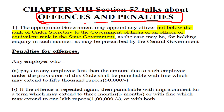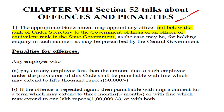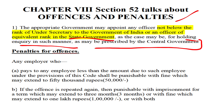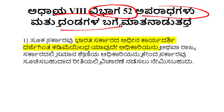It says that the appropriate government may appoint any officer not below the rank of Under-Secretary to the Government of India. This is very, very important. As we have seen, the officer who tries to settle the claim is not below the rank of a gazetted officer. Whereas the one who decides about offenses and penalties should not be below the rank of Under-Secretary to the Government of India, or an officer equivalent to that rank in state government, for holding inquiry in such manner as may be prescribed by the central government.